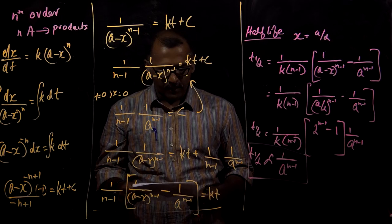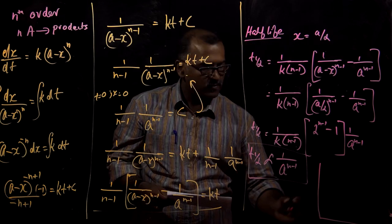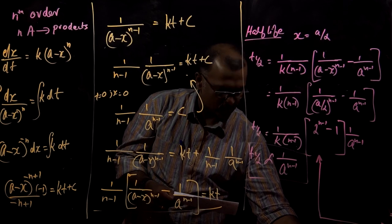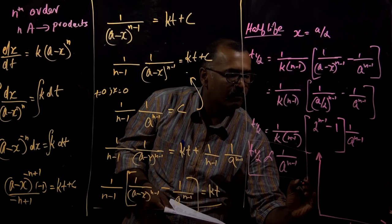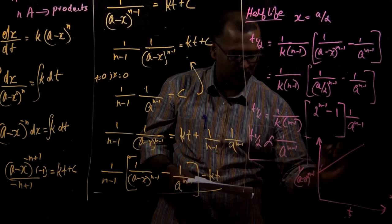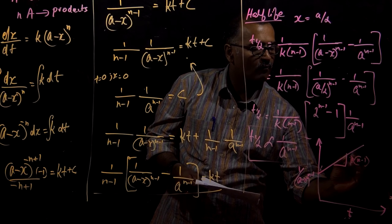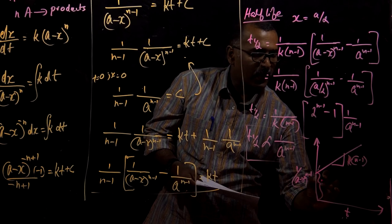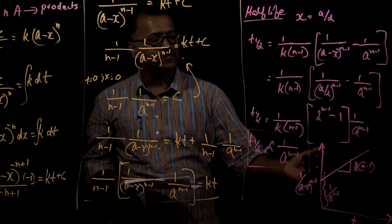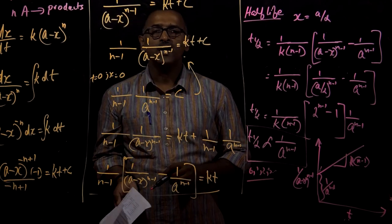For the graphical representation of the nth order reaction, plotting 1/(A minus X)^(n−1) on the y-axis versus time on the x-axis gives a positive slope. The slope equals K(n−1) and the y-intercept equals 1/A^(n−1). By substituting n as 0, 1, 2, 3, etc., you can find the rate equations and half-life relations for any order of reaction.